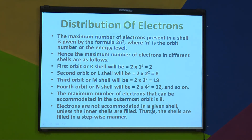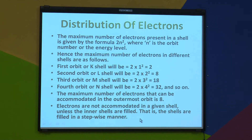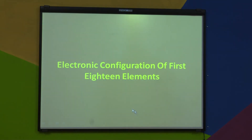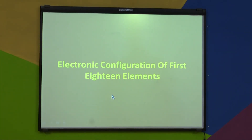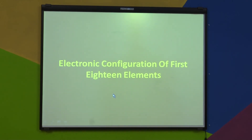Electrons are not accommodated in a given shell unless the inner shells are filled — meaning shells are filled in a stepwise manner. For example, if there are 5 electrons, first the first orbit gets filled: 2 electrons occupy the first orbit, and then the remaining 3 electrons go into the second shell. This stepwise distribution of electrons is called electronic configuration.